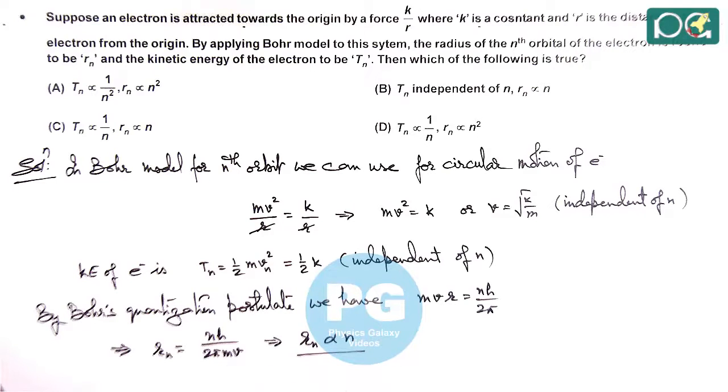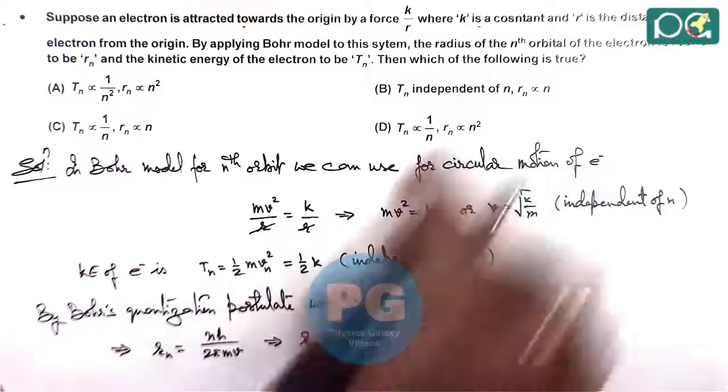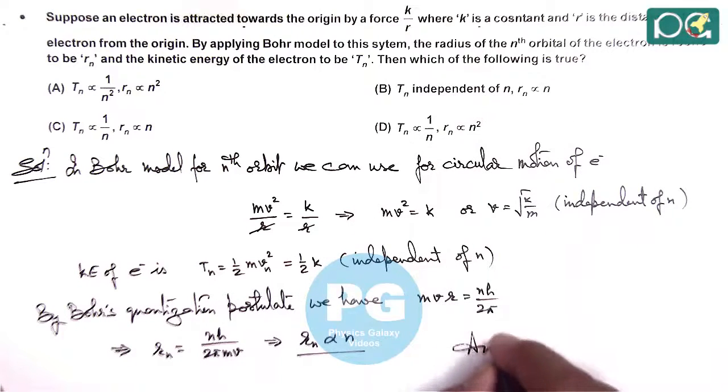As here v is independent of n, so here this verifies that in this case the answer to this question is option B.